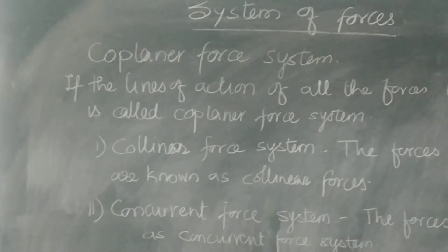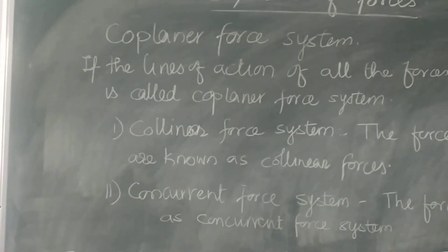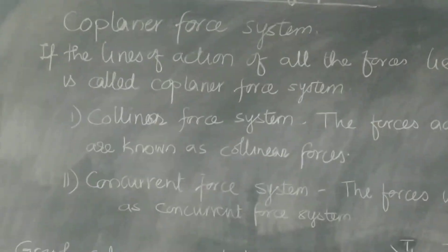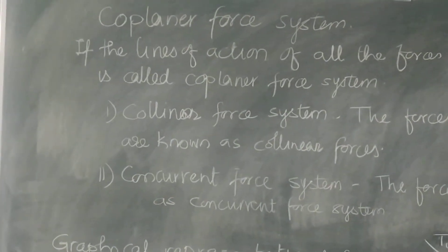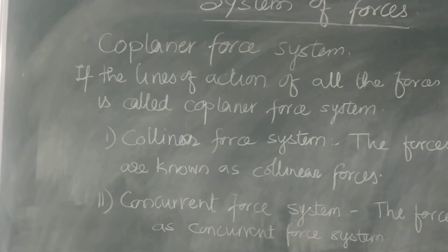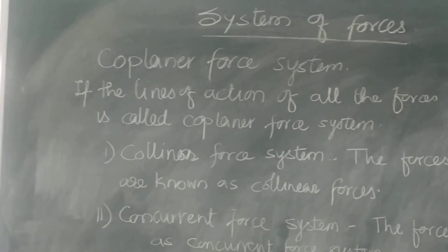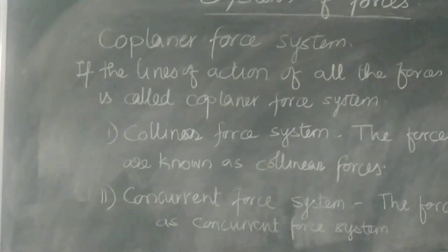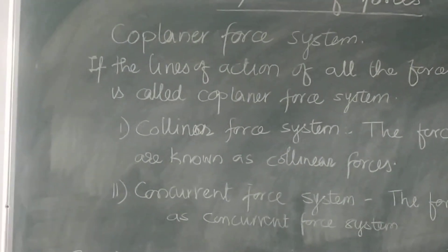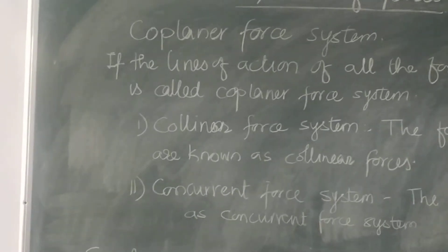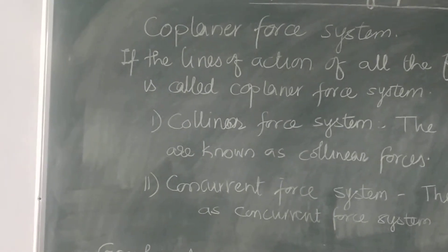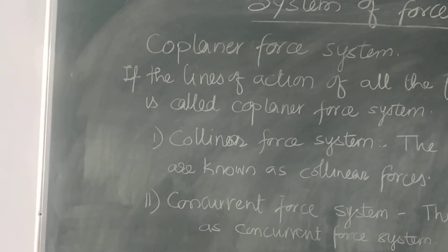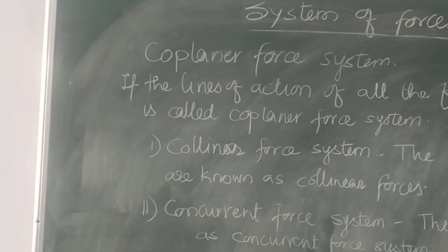Let us study first coplanar force systems, meaning all the forces are in the same plane. If the line of action of all the forces lie on the same plane, the system is called a coplanar force system. In coplanar force systems, there are four or five types: collinear force system, concurrent force system, non-concurrent force system, and parallel force system.